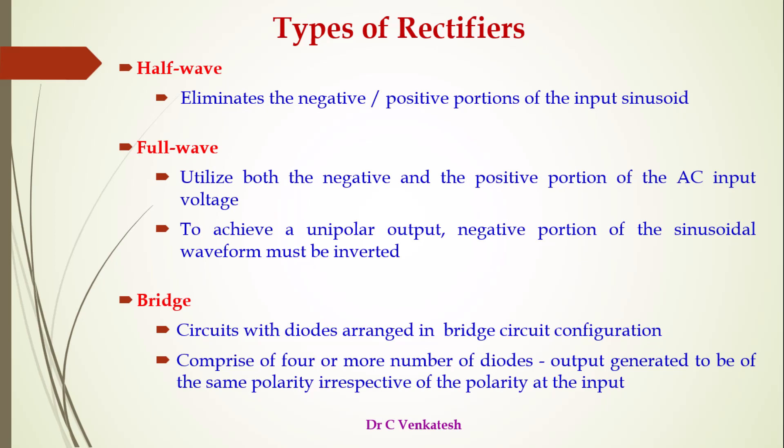Next, rectifier types. Rectifiers are used for converting AC to DC. The rectifier types are: half wave rectifiers, full wave rectifiers, and bridge rectifiers. A half wave rectifier eliminates the negative portion of the input sinusoid, or eliminates the positive portion of the input sinusoid, depending upon the diode connection.